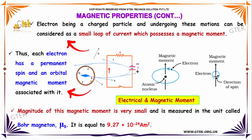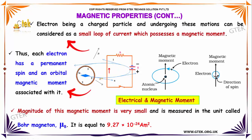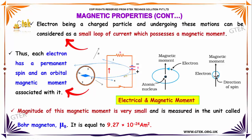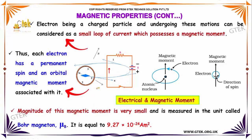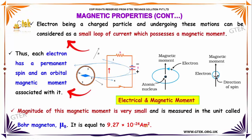The magnitude of this magnetic moment is very small and it is measured in the unit called the Bohr magneton, which is equal to 9.27 × 10⁻²⁴ ampere meter squared.